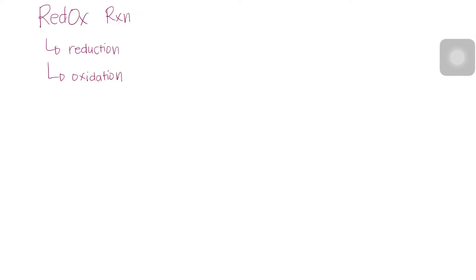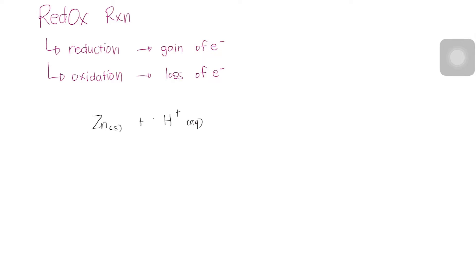First, let us differentiate between reduction and oxidation. When we say reduction, it is simply the gain of electrons, while oxidation means the loss of electrons. We determine whether a given chemical reaction is a redox reaction by keeping track of the oxidation numbers or oxidation states of the elements involved in the reaction. This procedure helps us to identify whether the oxidation number changes for any elements involved.